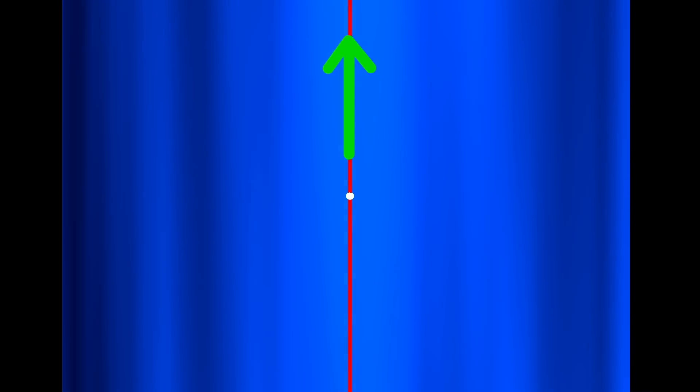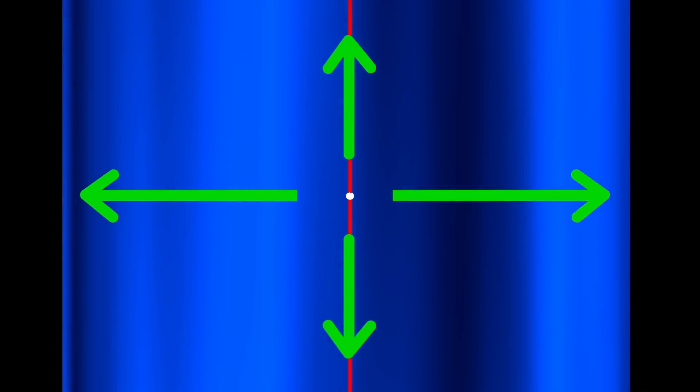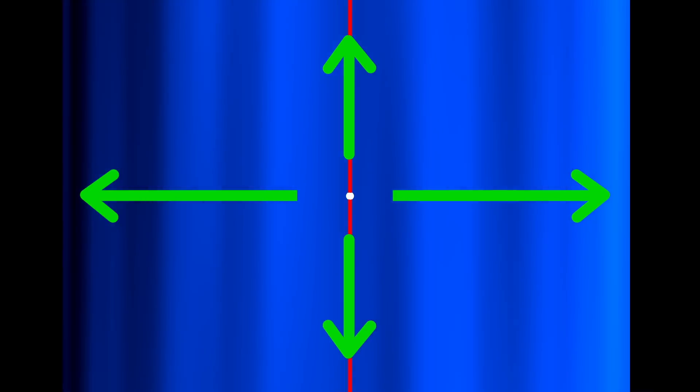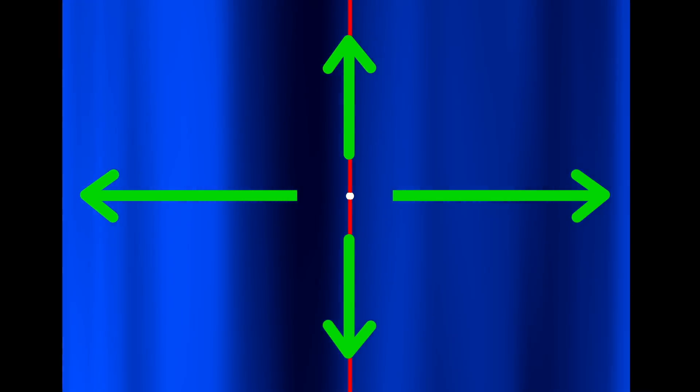At this point we would feel an equal attraction from the mass above, below and from each side. The net result would be a canceling out of all the forces. This means at the center of the filament the gravitational forces from the filament do not act.